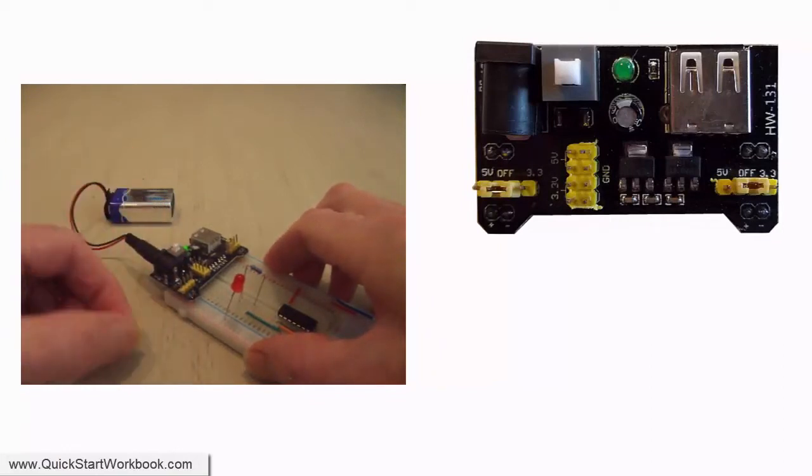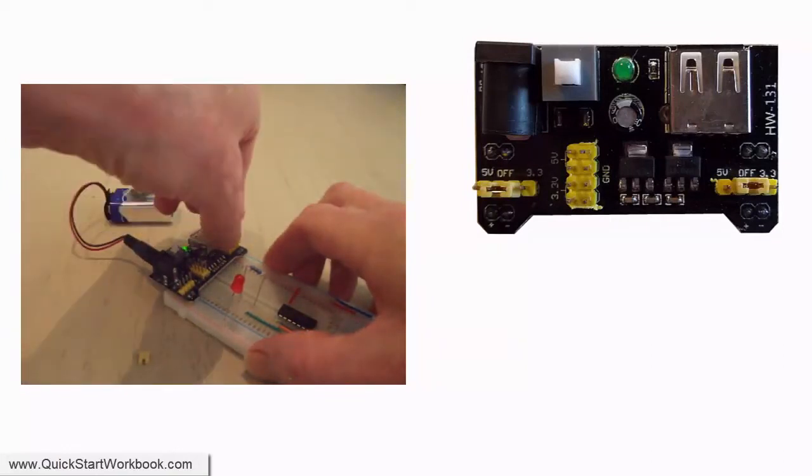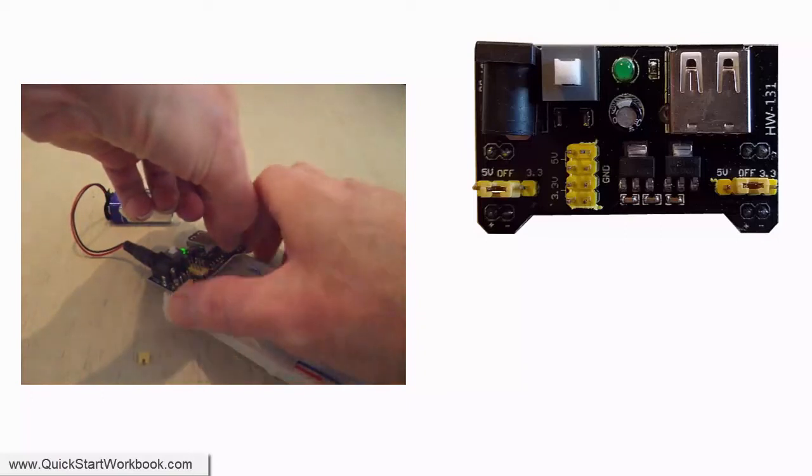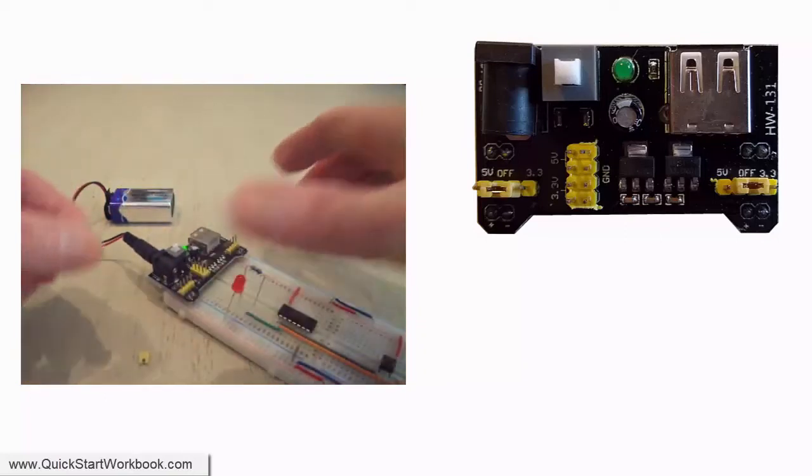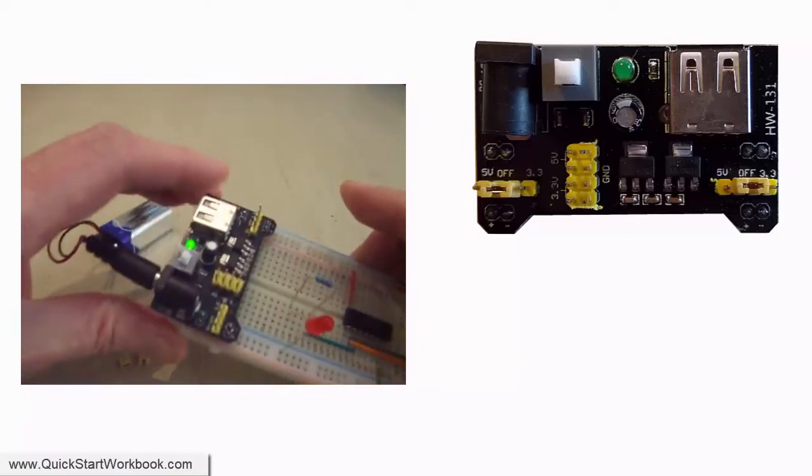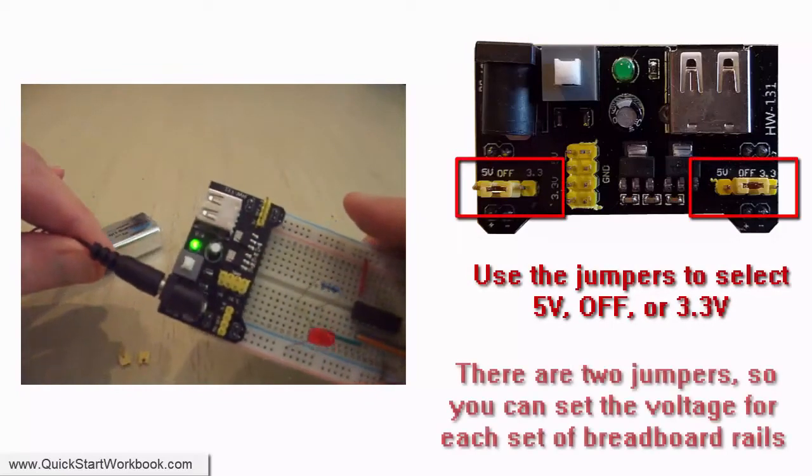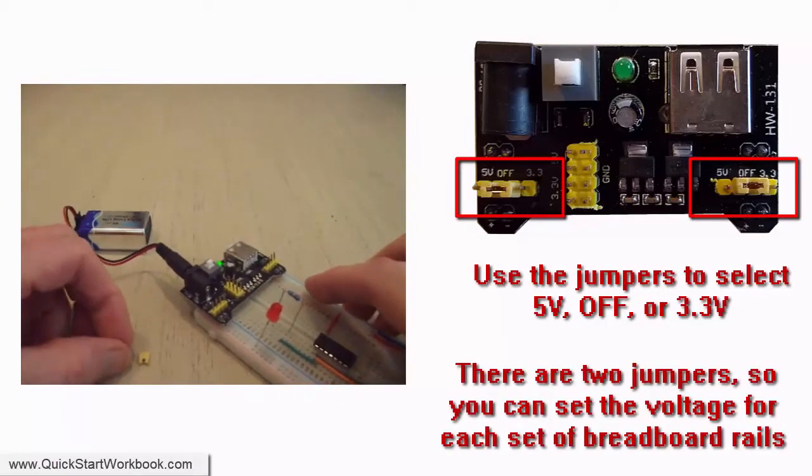When the module is connected to a breadboard, you can choose whether you want to supply 5 volts or 3.3 volts to the breadboard rails. Each 3.3 volt or 5 volt supply has a small jumper to enable you to select what you want.